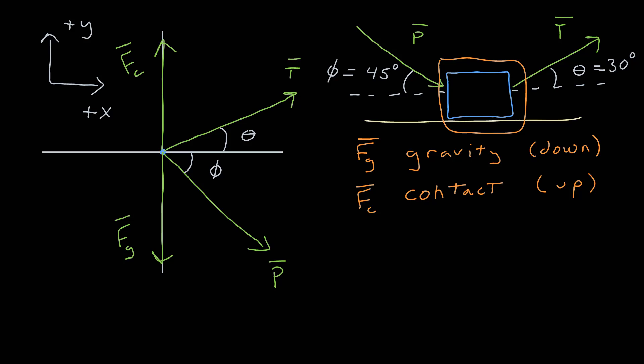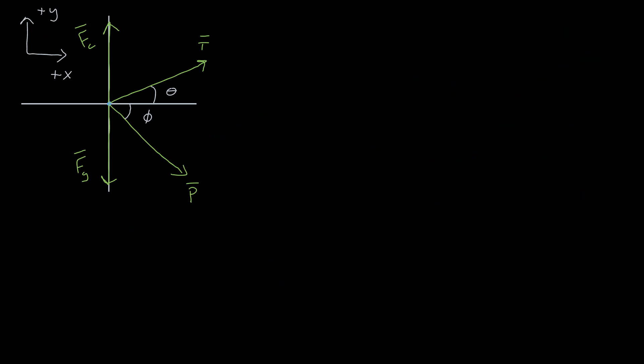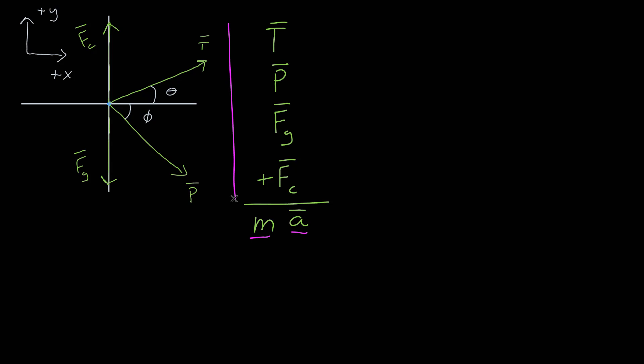Now I can apply Newton's second law. Newton's second law says the vector sum of all the forces on an object equals the mass of that object times its acceleration. I want to show you a method that really helps when starting these types of problems. Here is Newton's second law with all the vectors added up, equal to mass times acceleration. The goal is to create scalar relationships from this vector equation by writing all the vectors in component form.